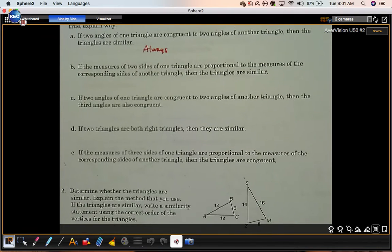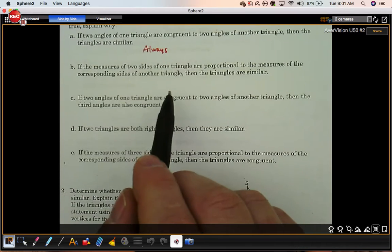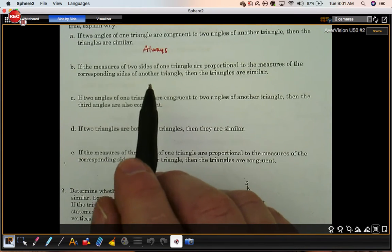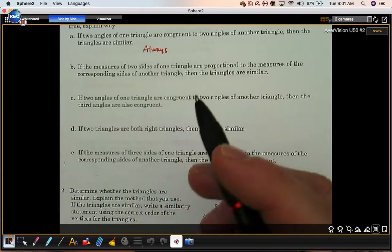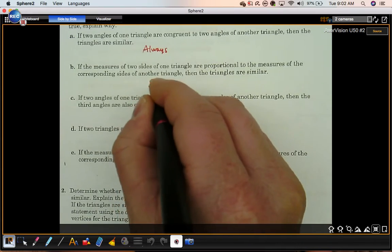Part B. If the measures of two sides of one triangle are proportional to the measures of corresponding sides of another triangle, then the triangles are similar. Well, the way it's stated, that's not enough to say that they definitely are similar, but they certainly could be, which is why we're going to put sometimes.